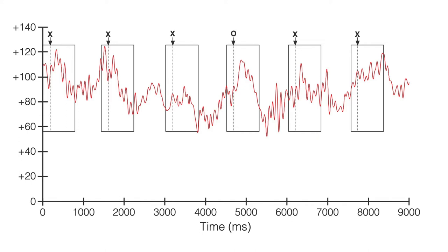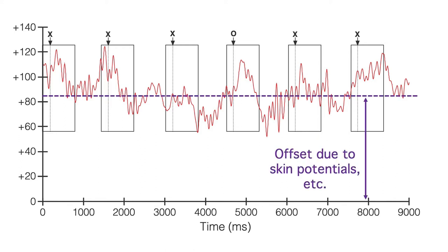This is 9 seconds of EEG data from an oddball experiment with frequent x's and rare o's. The EEG is riding on top of a bunch of non-neural slow potentials, mainly arising from the skin or from static charges in the electrodes themselves. This voltage offset changes slowly over time, and it can be huge. In this example, it's around 85 microvolts. But it's unpredictable.